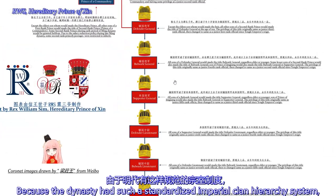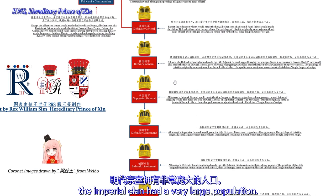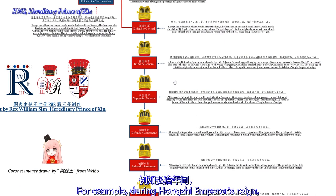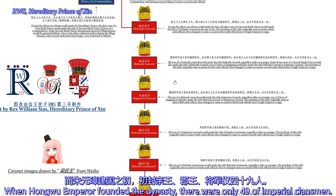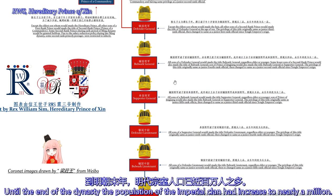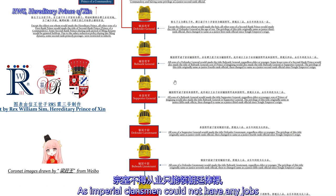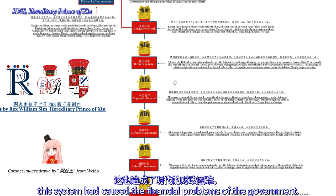Because the dynasty had such a standardized imperial clan system, the imperial clan had a very large population. For example, during the Hongzhi Emperor's reign, Zhu Zhongyi, Prince of Qingsheng from Shanxi, had 92 children. When the Hongwu Emperor founded the dynasty, there were only 49 imperial clansmen. By the end of the dynasty, the population of the imperial clan had increased to nearly a million. As imperial clansmen could not hold any jobs, this system caused serious financial problems for the government.